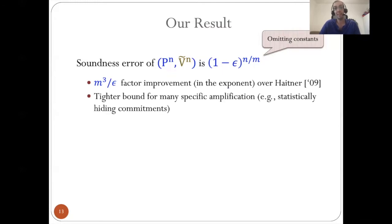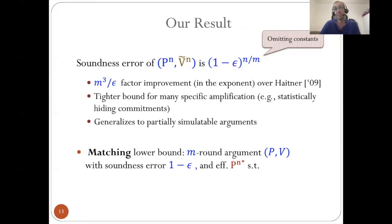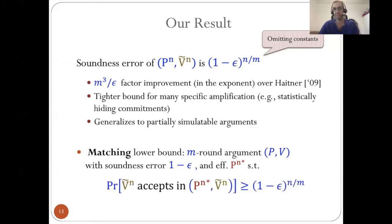This is a significant improvement over Heidner's analysis and immediately yields tight bounds for many specific amplification settings, for instance statistical hiding commitments. This is also generalized to partially simulatable arguments. Our second result is a matching lower bound: we show an M-round argument PV such that if you take its random terminating variant and repeat it in parallel N times, there exists an attacker P-N-star that can convince all N random terminating verifiers to accept with probability no more than epsilon to the N over M, showing this M factor is essential.